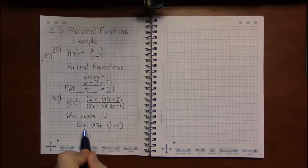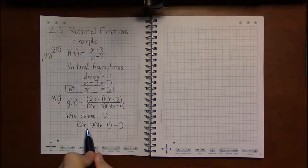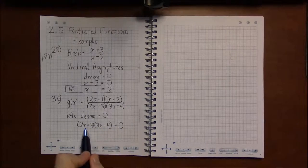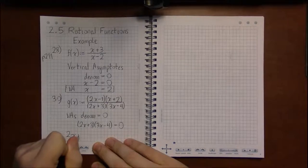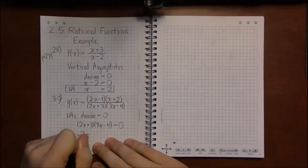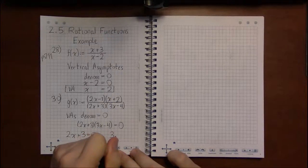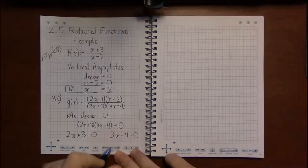In this case, we've got a product of two things being zero. And whenever you have a product of two numbers being zero, one of the two numbers has to be zero. So it's either the case that 2x plus 3 is zero, or 3x minus 4 is zero.